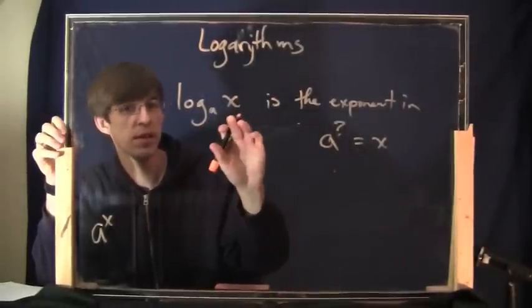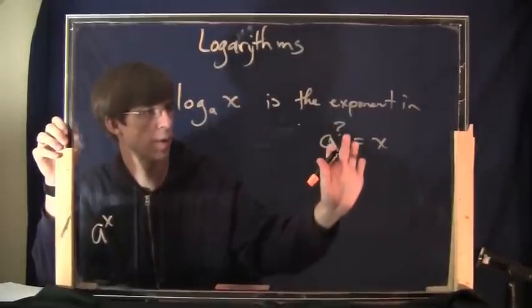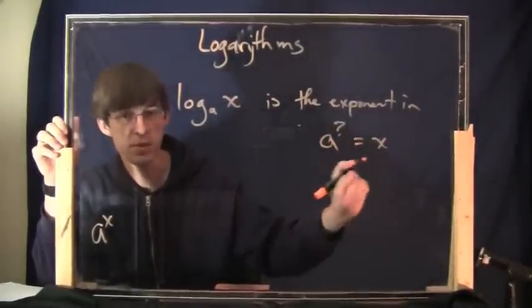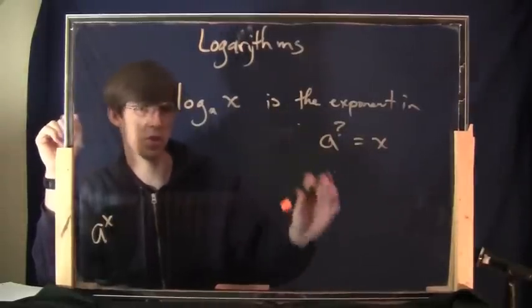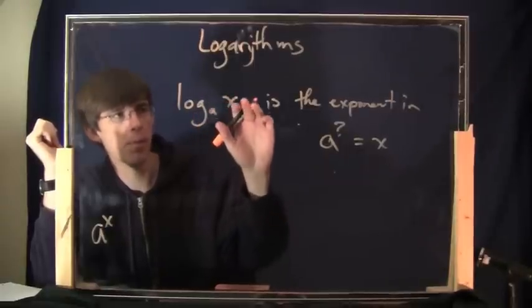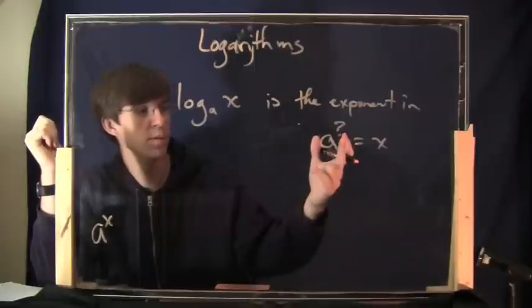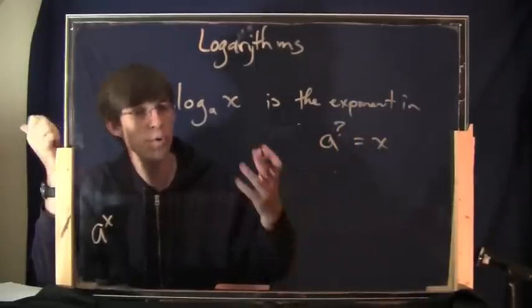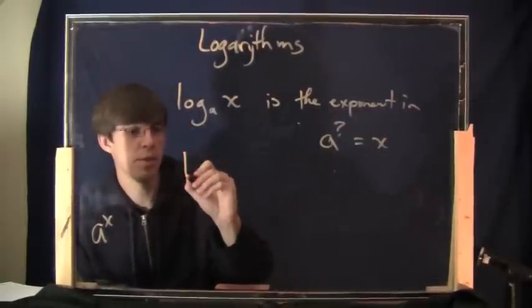So when you see log base a of x, it means what this is is a number, and it is whatever number is necessary to go here to make this true. All right, it's a little weird as a definition. What's weird about this is there isn't like a specific formula by which you can compute this. You basically have to either, for some reason, you can just know the answer sometimes, or you have to do it on your calculator. But sometimes it is actually fairly easy.